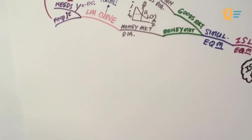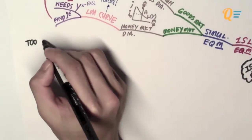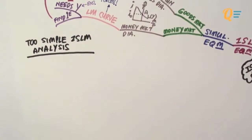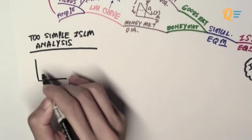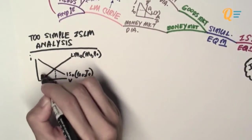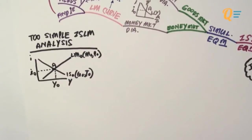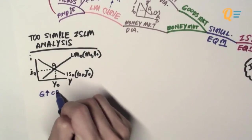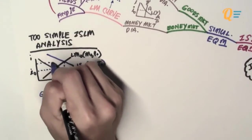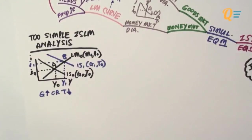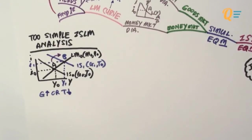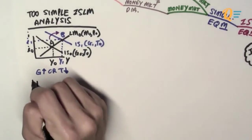You may have already seen the IS-LM model in your study guide or lecture notes, but you have to be careful of a too-simple IS-LM analysis. Typically, what most people would do is: given an expansionary fiscal policy — like an increase in government spending or a reduction in taxes — they say the IS curve shifts to the right, the new income level is Y1, the new interest rate is I1, and the economy moves from point A to point B. End of story. Well, that is not enough.